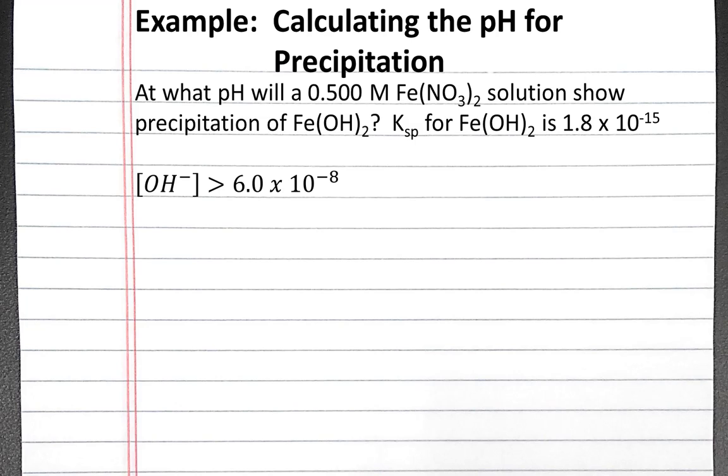Since we know the threshold for the hydroxide ion concentration that will cause precipitation of iron 2 hydroxide, we can calculate the pH that corresponds to this hydroxide ion concentration. From the hydroxide ion concentration, we can calculate pOH, which is 7.22, and a pH of 6.78.